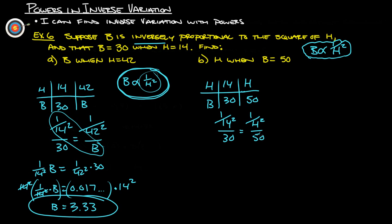So this is going to turn into 50 over 14 squared, because 50 times 1 over 14 squared is 50 over 14 squared, and that's going to equal 30 times 1 over H squared, which we can write as 30 over H squared.